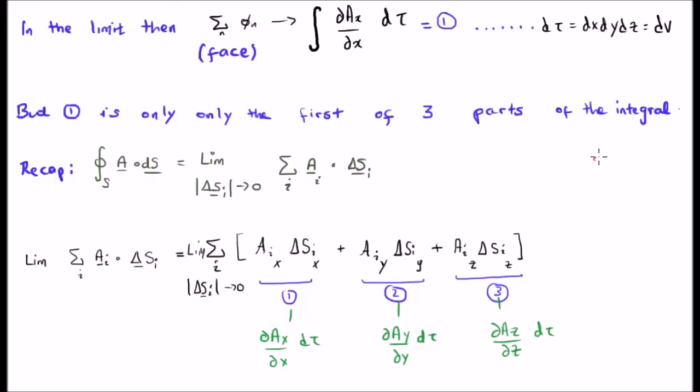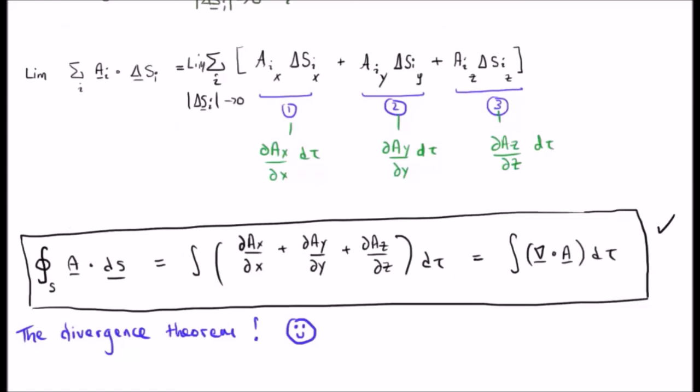Just to recap, this is the expression we started with. But that's not something that I'm sure you'll need to look back on. The point here is that in the limit, our Riemann sum is going to become an integral. We're going to get the integral with respect to the infinitesimal volume element d tau. Del A sub x del x, del A sub y del y, del A sub z del z.